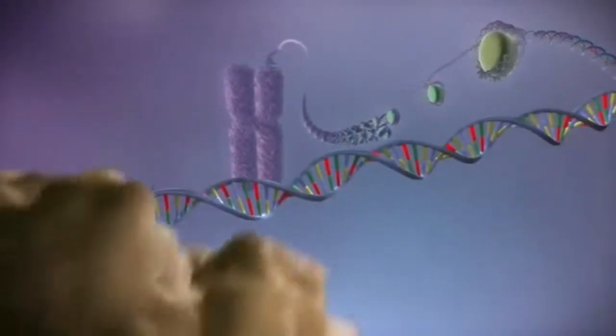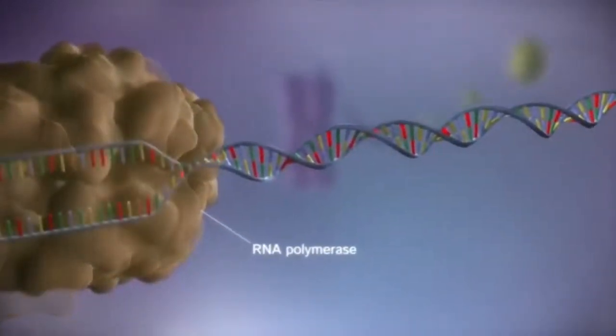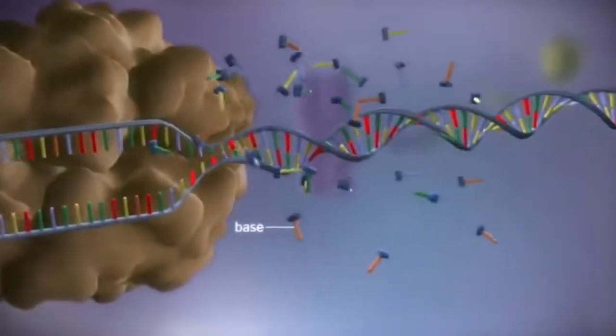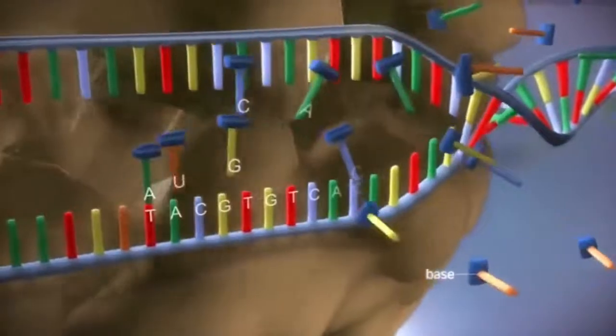When a gene is switched on, an enzyme called RNA polymerase attaches to the start of the gene. It moves along the DNA, making a strand of messenger RNA out of free bases in the nucleus.